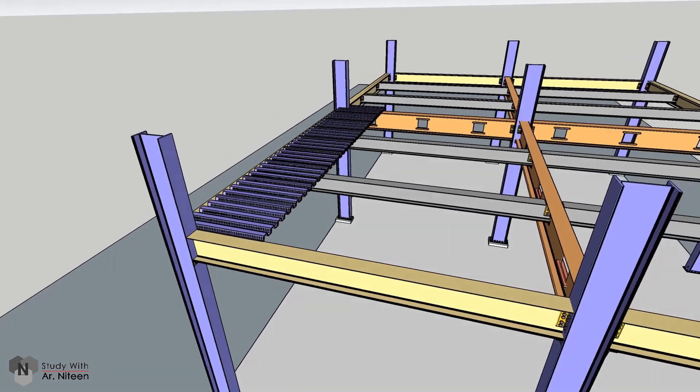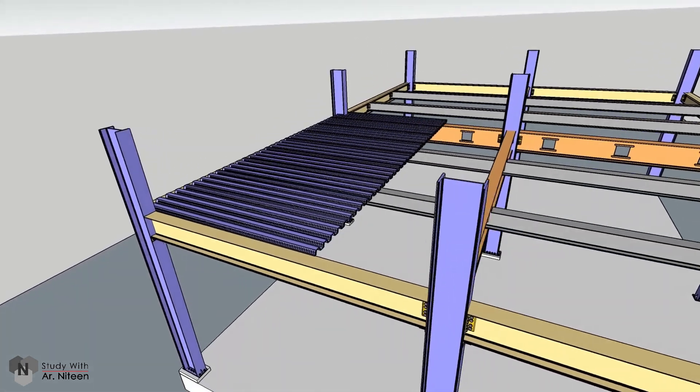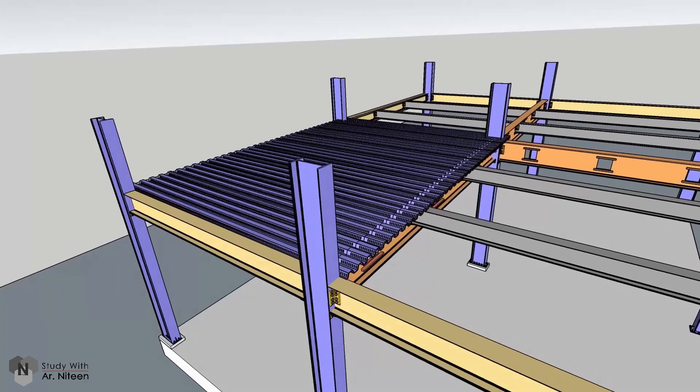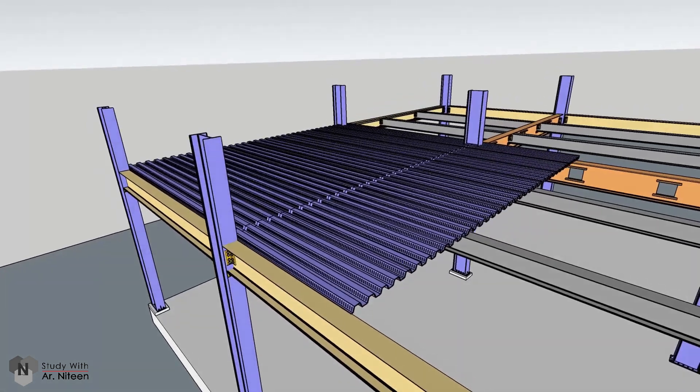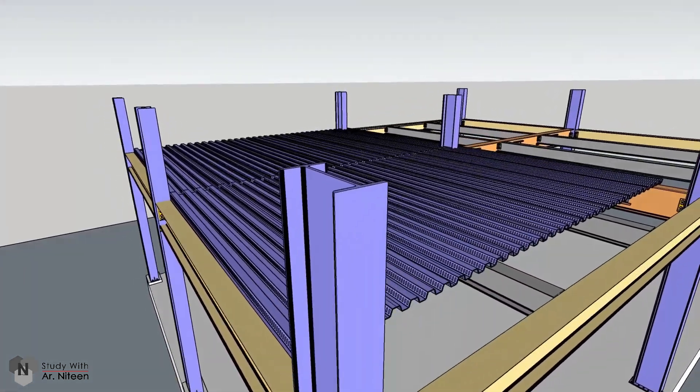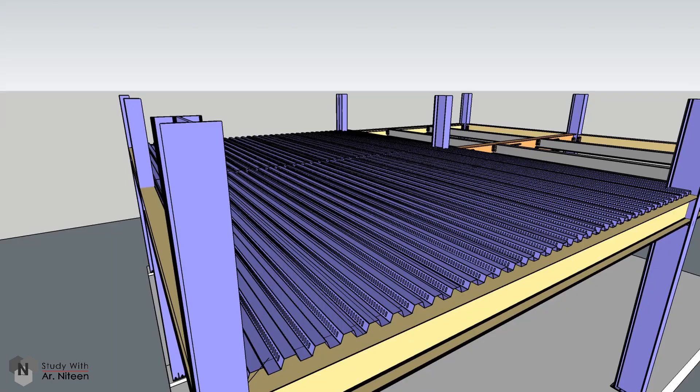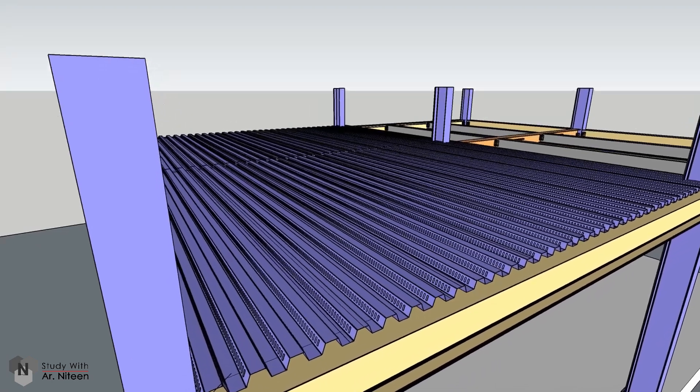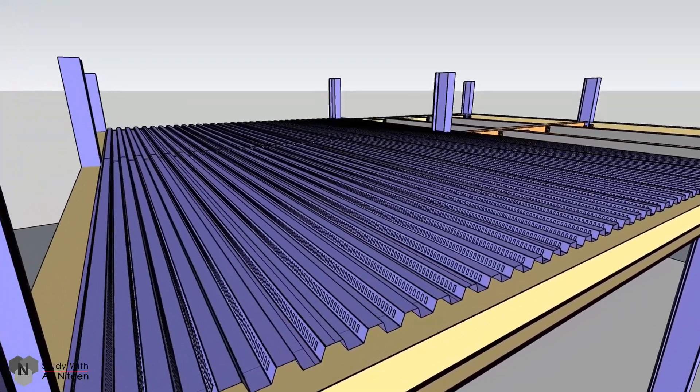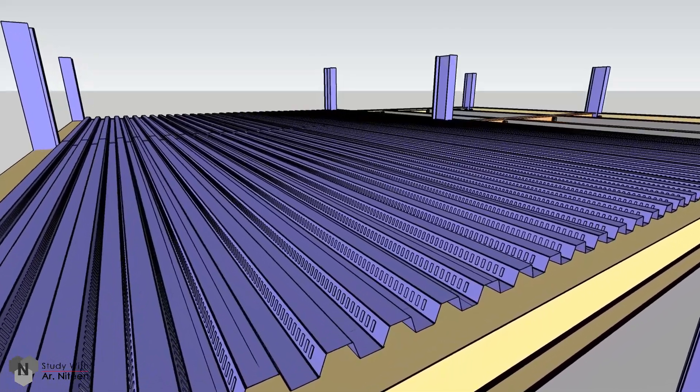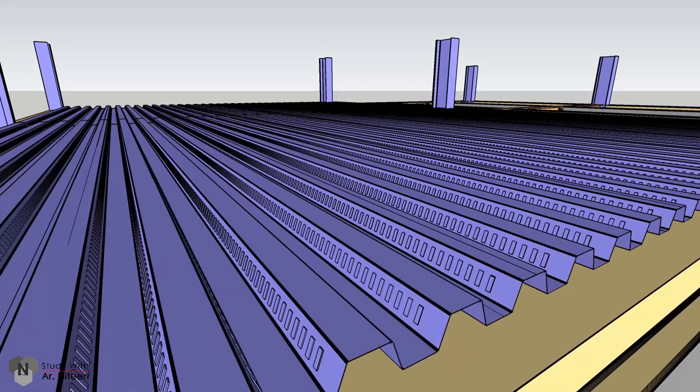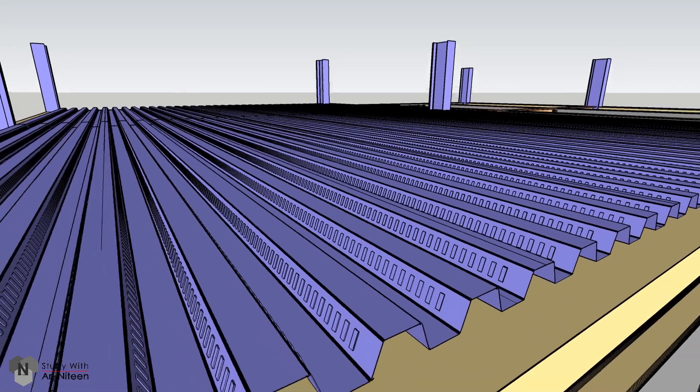Composite slabs. The common span of composite slabs is between 3 meters and 4 meters. If temporary propping is used, it is possible to use longer spans. Considering a shallow decking, slab thicknesses are in the range of 100 mm to 200 mm, and for deep decking between 280 mm and 320 mm.